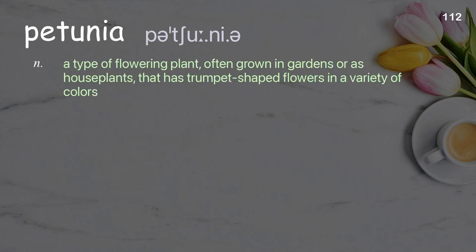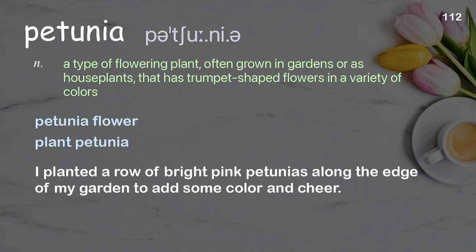Petunia. A type of flowering plant, often grown in gardens or as houseplants, that has trumpet-shaped flowers in a variety of colors. Examples: petunia flower, plant petunia. I planted a row of bright pink petunias along the edge of my garden to add some color and cheer.